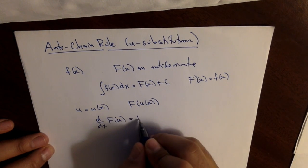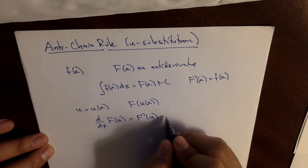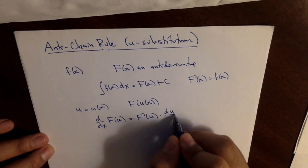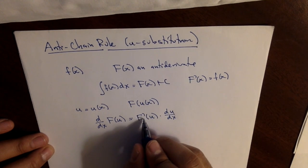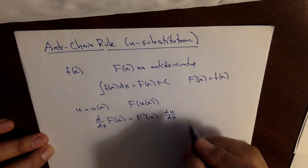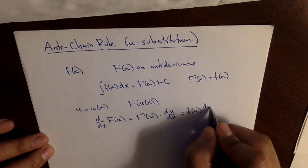So what do we get? You get the derivative of the outside, plug in the inside, times the derivative of the inside. Let's just call it du by dx. And of course the derivative of capital F is the function little f, right? So I can call this f of u du by dx.